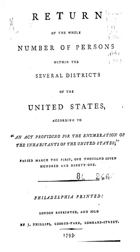No microdata from the 1790 Population Census are available, but aggregate data for small areas, together with compatible cartographic boundary files, can be downloaded from the National Historical Geographic Information System.